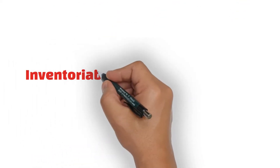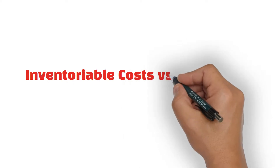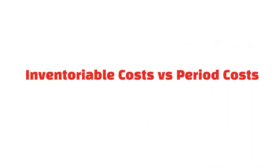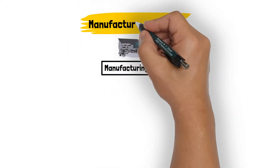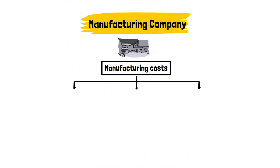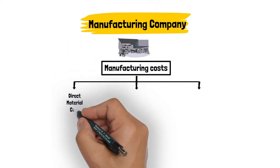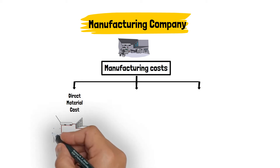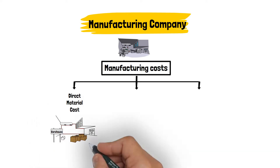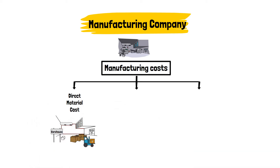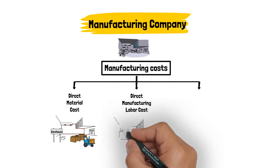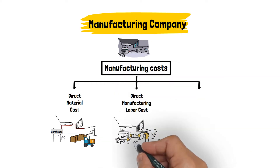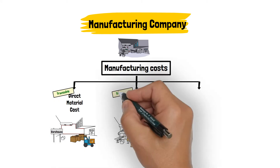Another classification of costs: inventoryable costs versus period costs. Manufacturing costs incurred by manufacturing companies include direct material cost, which includes the acquisition cost of all direct materials that are issued to production, and direct manufacturing labor cost, which includes all the benefits paid to the labor assigned to production. These two can be easily traced to the product.